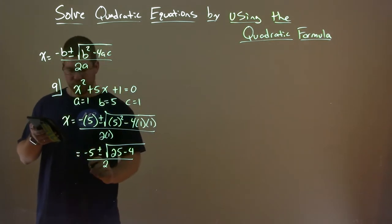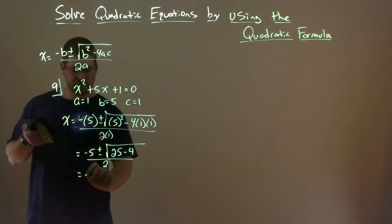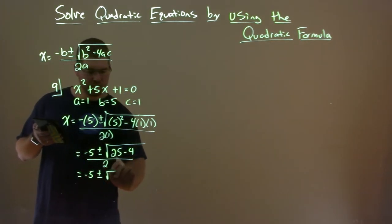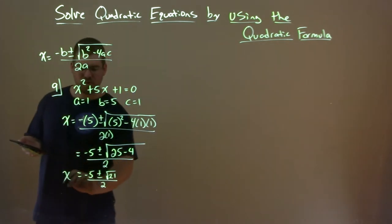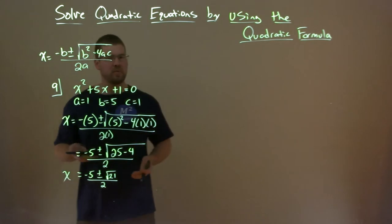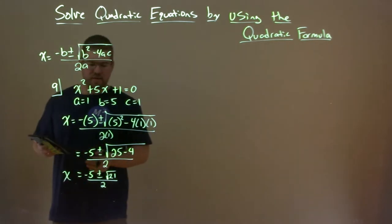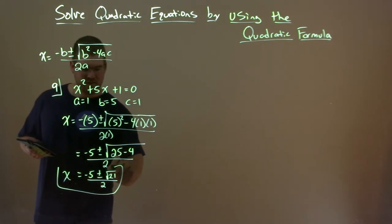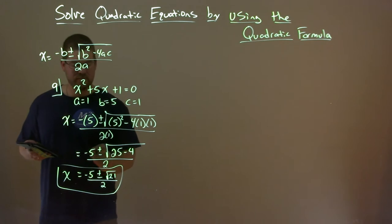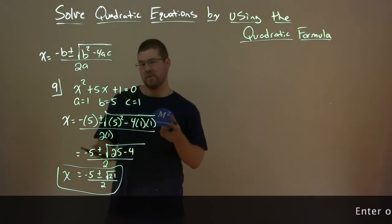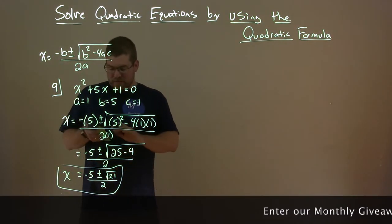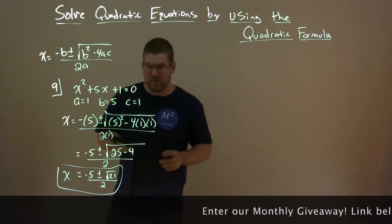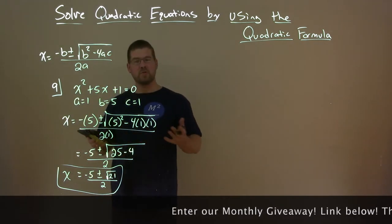25 minus 4 is 21, over 2. And that's it — that's really our answer. You can write it separately if you want, but sometimes it's easier to see it like this. So x equals negative 5 plus or minus the square root of 21, divided by 2. We've solved it using the quadratic formula — it wasn't too bad.